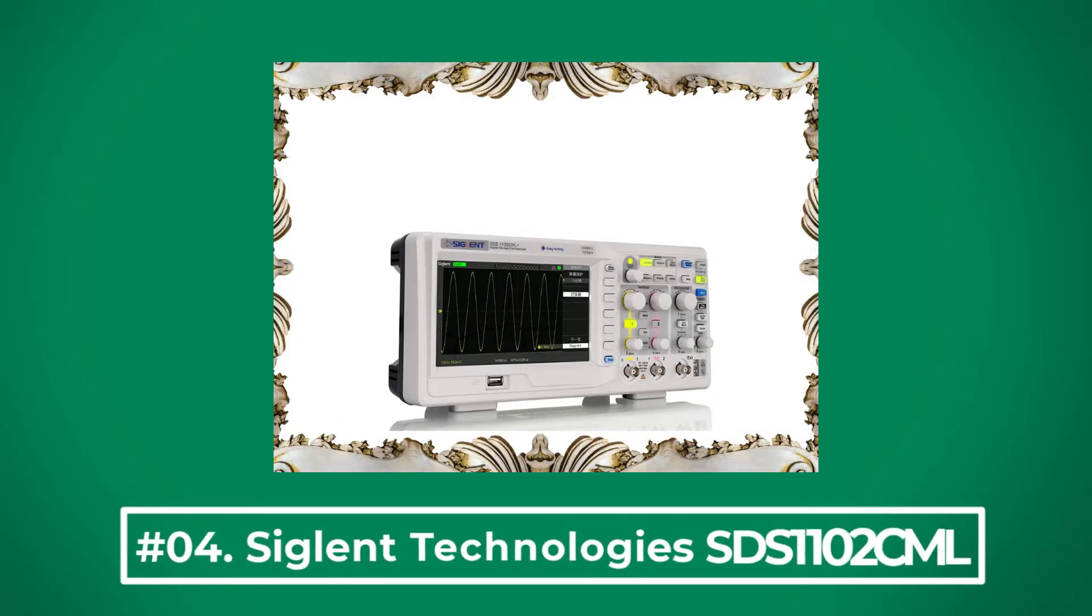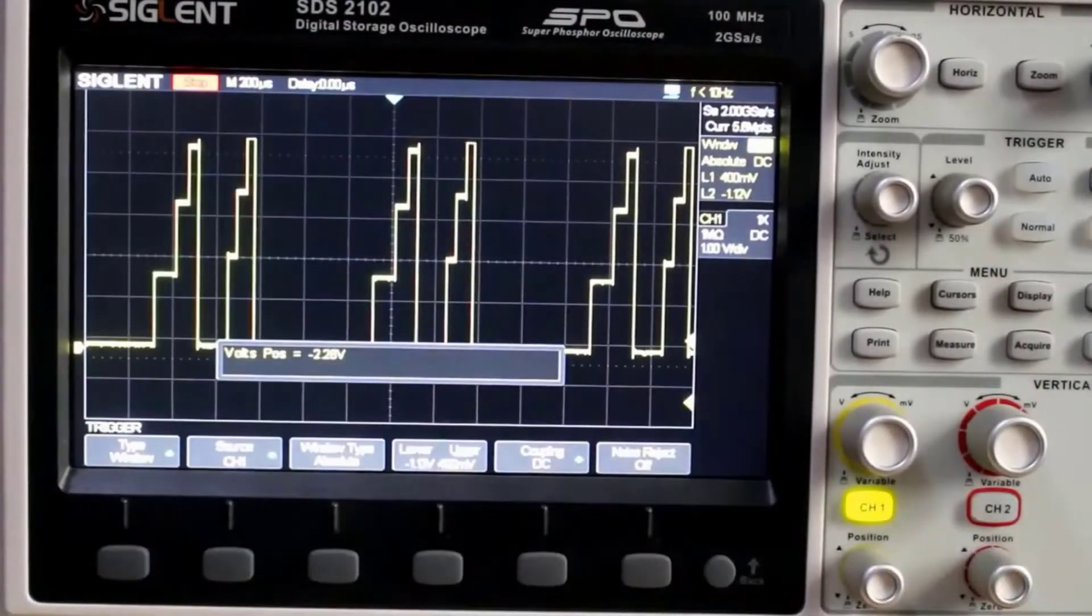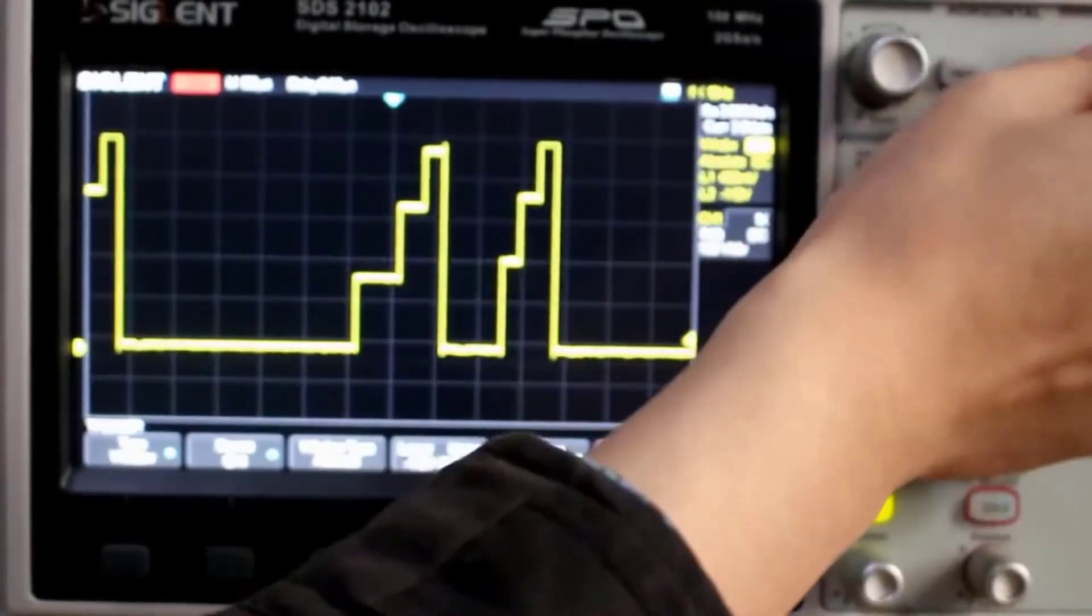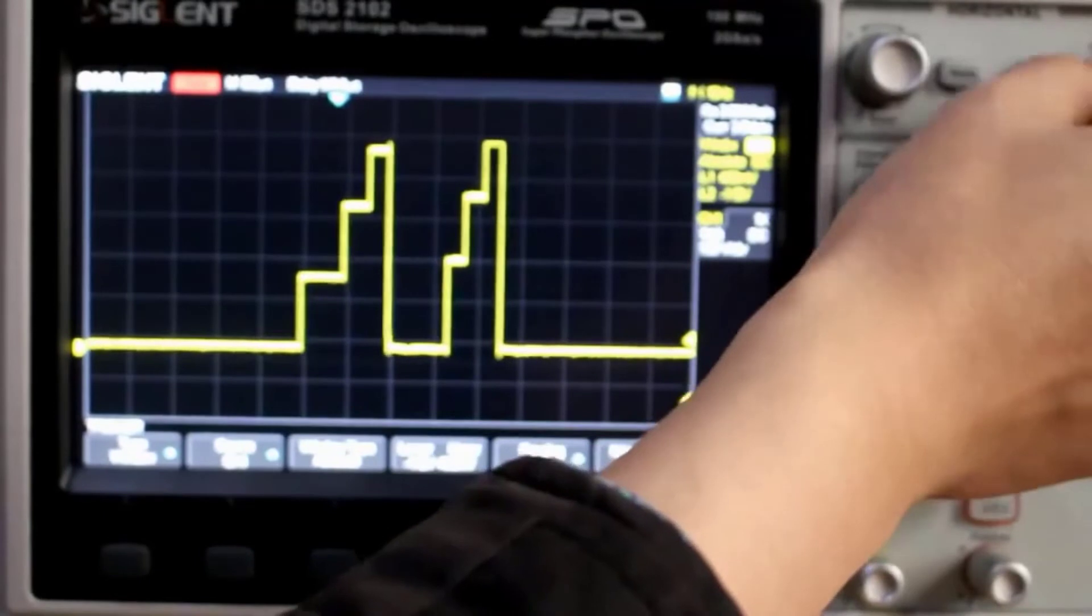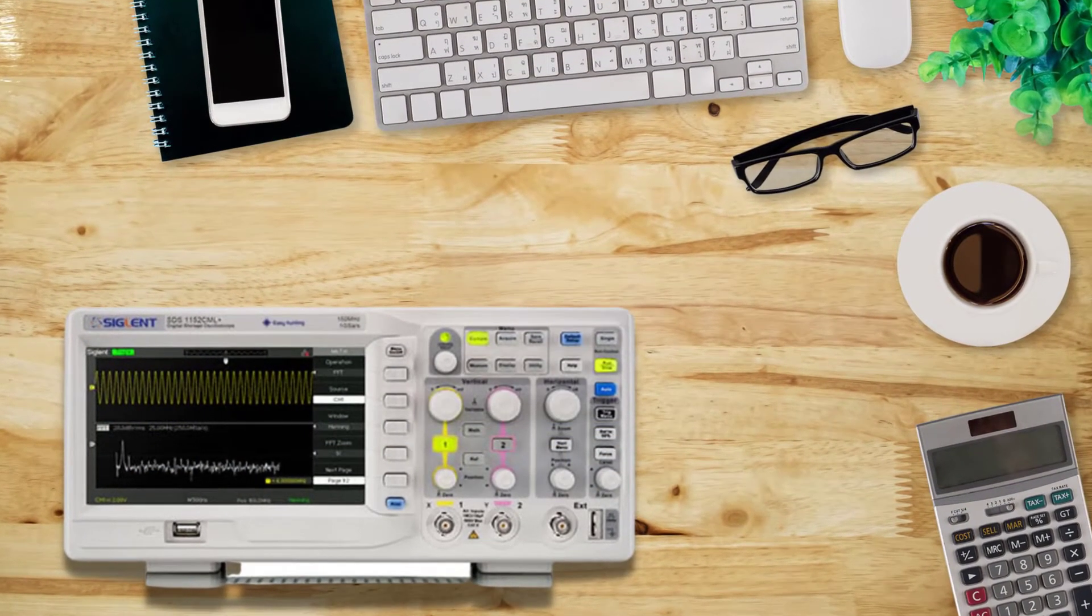At number 4, Siglent Technologies SDS-1102-CML Plus. The Siglent SDS-1102-CML Oscilloscope is a great scope for the money, too. It's a great tool in assembly lines, electrical engineering classes, and product design offices, among other situations.